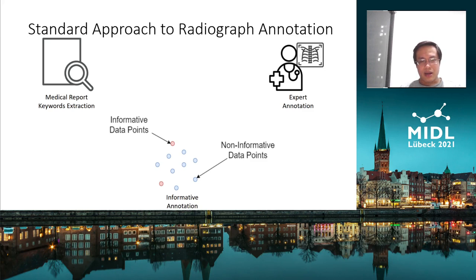The consensus between each annotator is hard to obtain. We can apply active learning to pick informative data points to reduce the amount of data that each expert needs to label. This reduces the cost and reduces the disagreement between annotators.